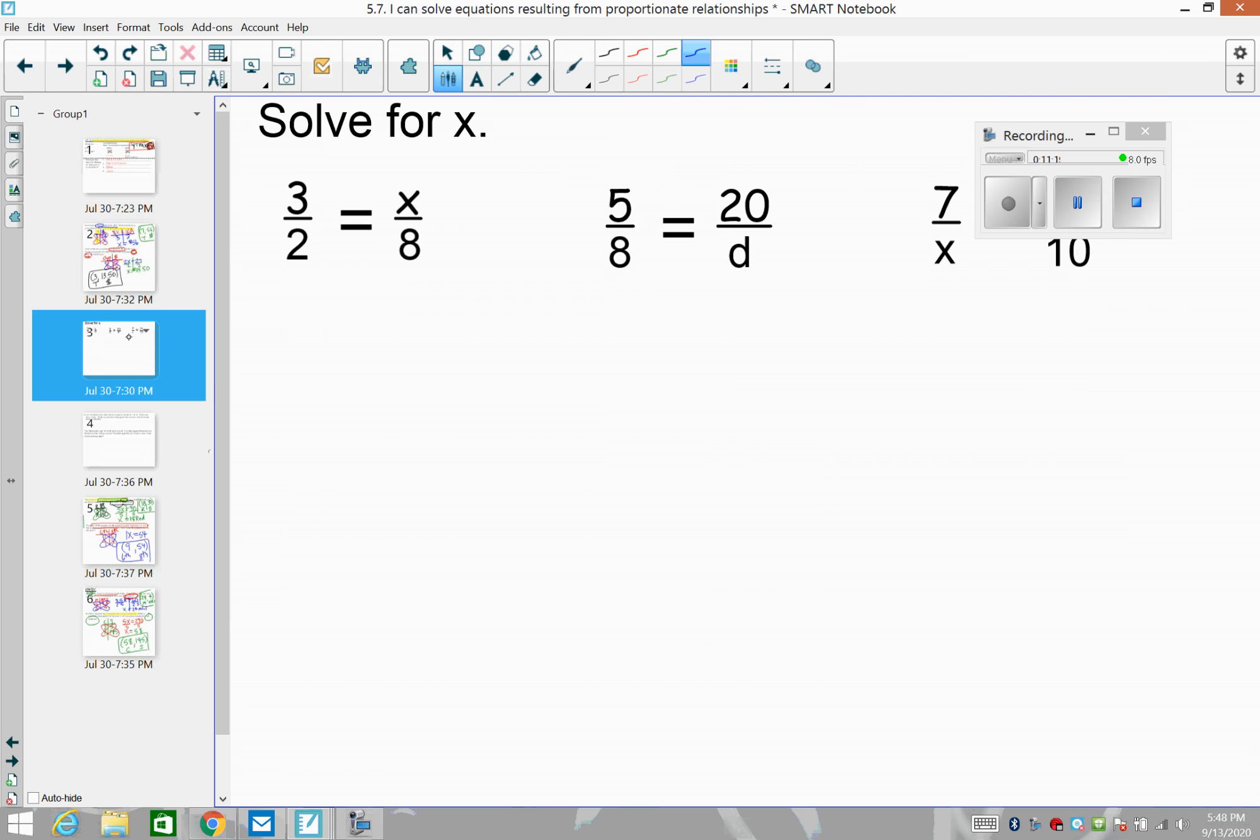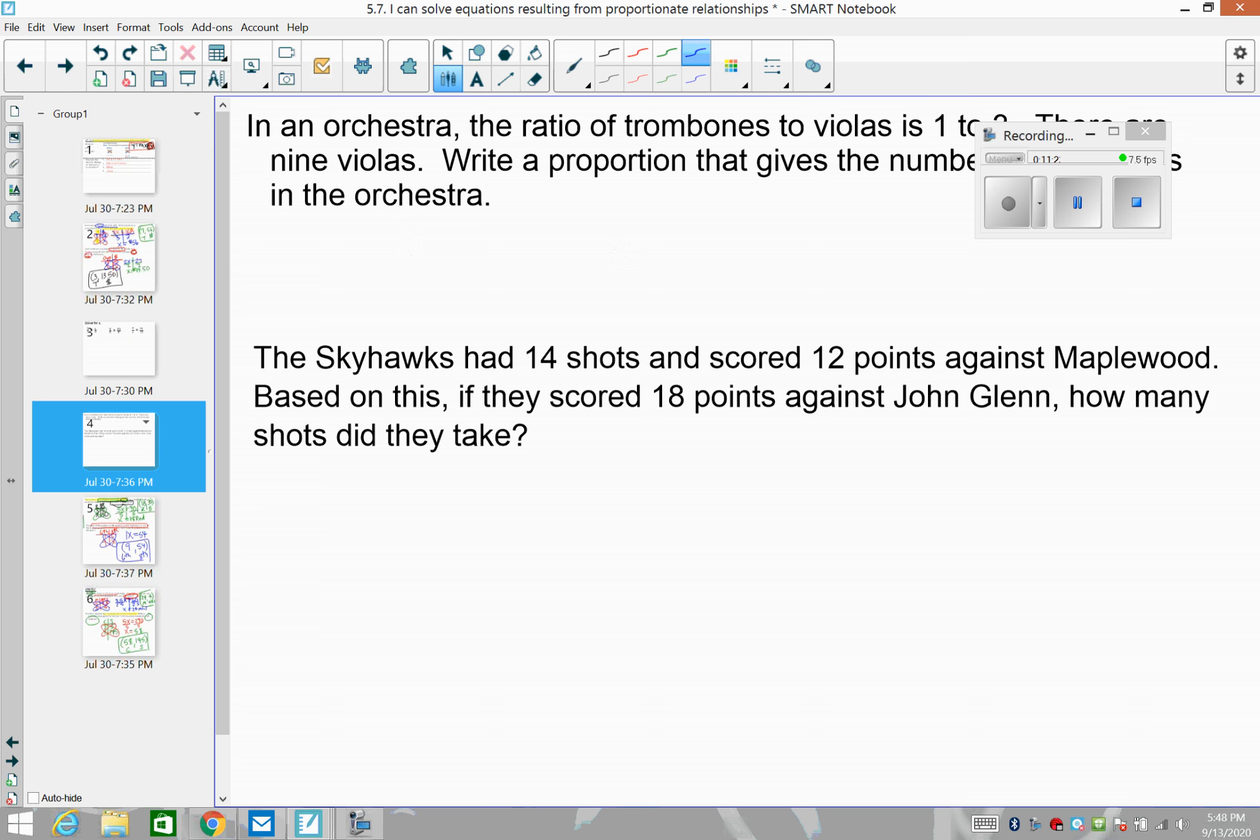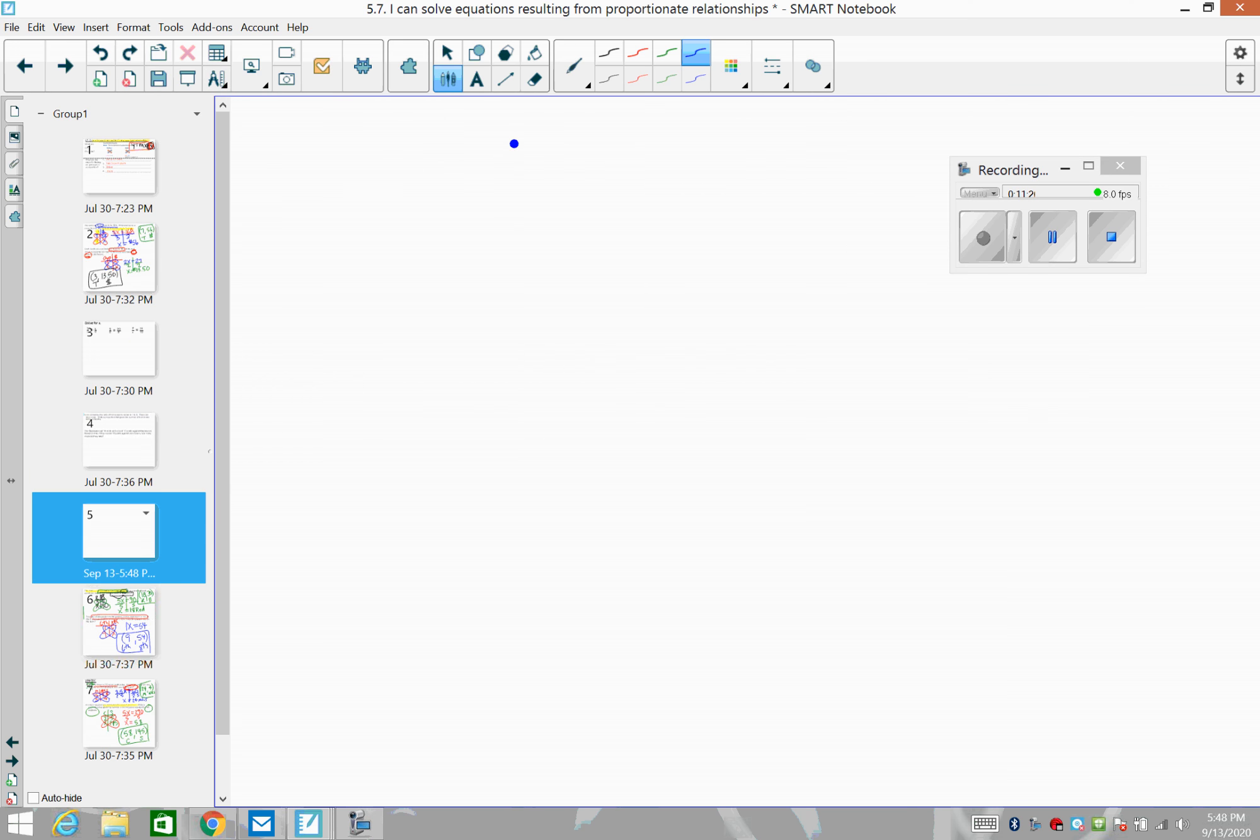So our job today basically is to set up any proportionate situation and take cross products. I'm not going to do those. They're way too easy for you. And I don't think I'm going to do those. So just a reminder to set up your table and then simply take cross products. That's our learning target for today on solving equations resulting from proportionate situations. Have a glorious night.